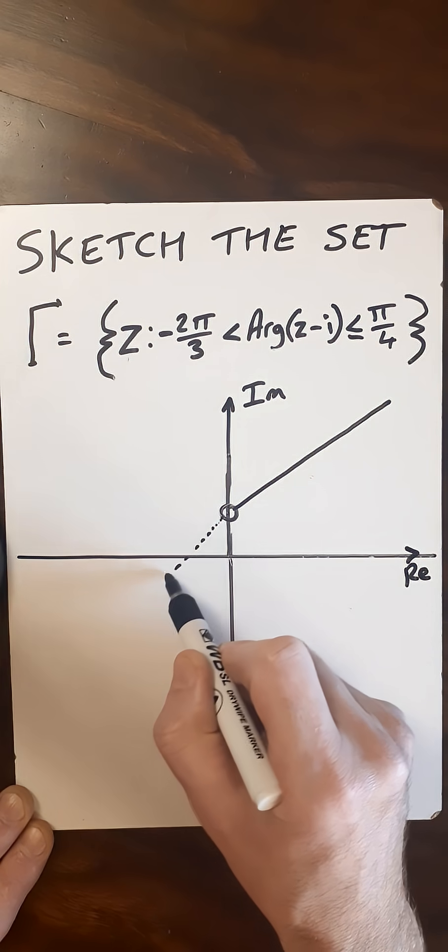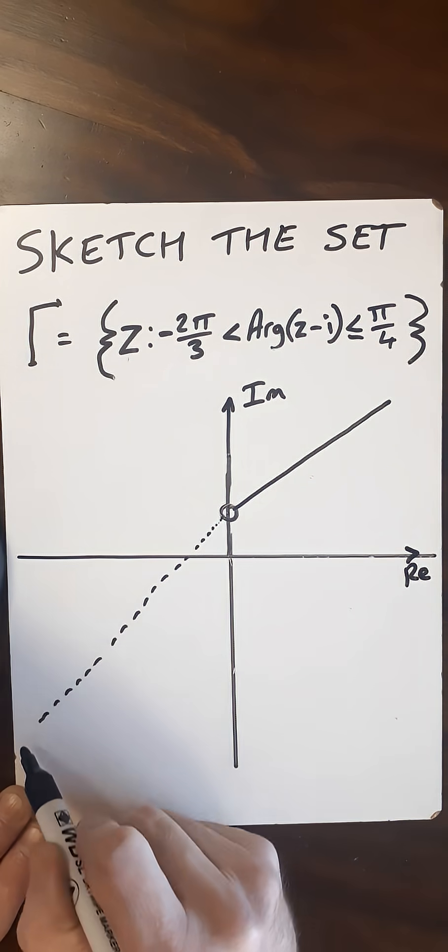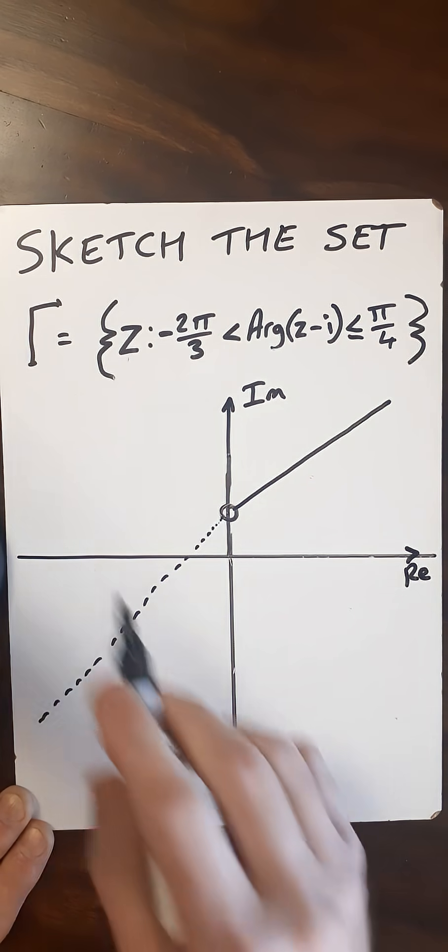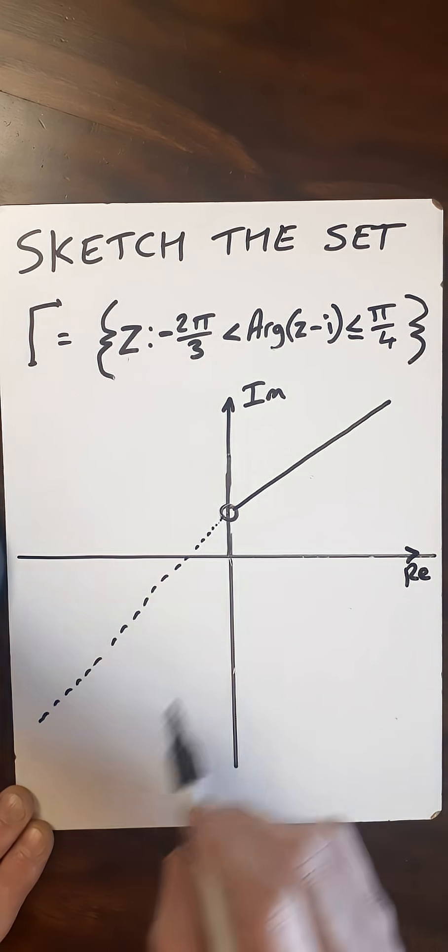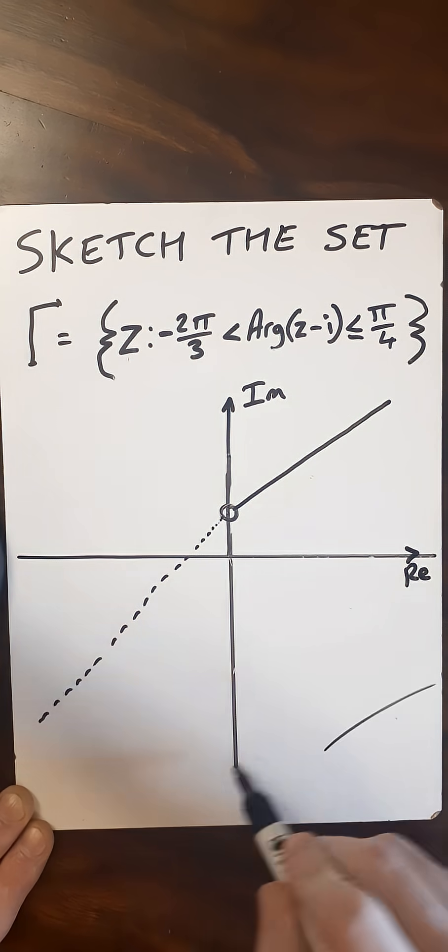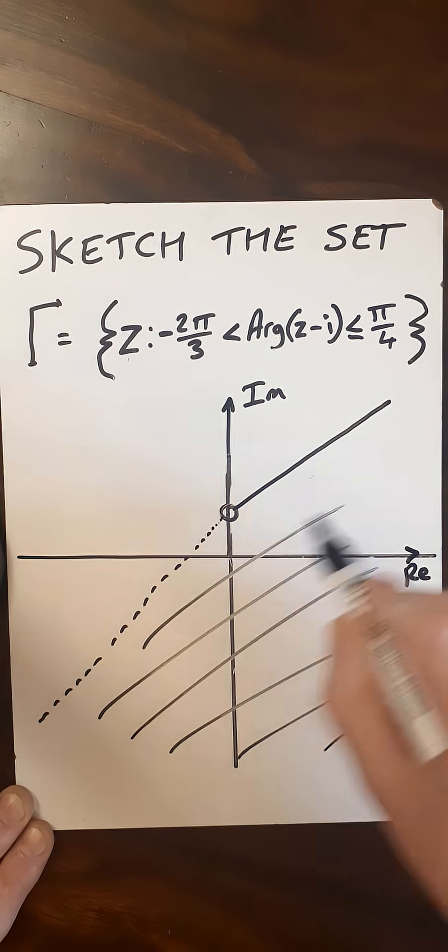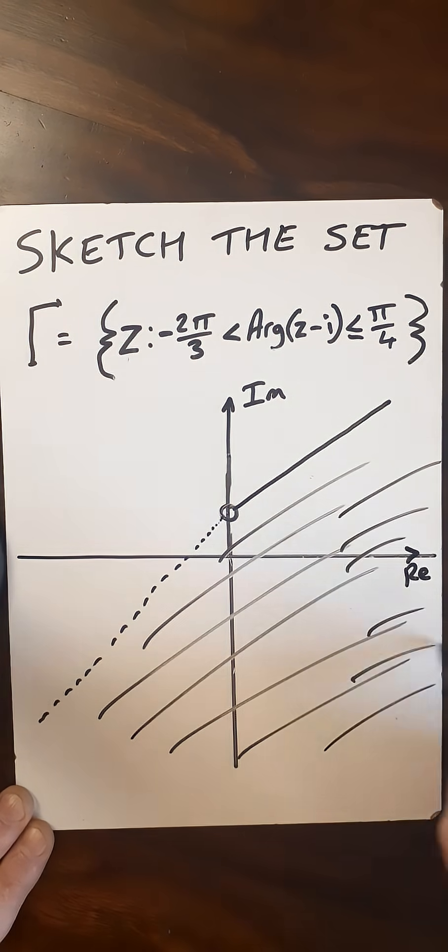So I'll do a dotted line going in this direction, which will go on forever. And now my set gamma will be all of everything contained here within this set. So we'll just draw lines here to show that it's defined for all of this. And that's our set gamma.